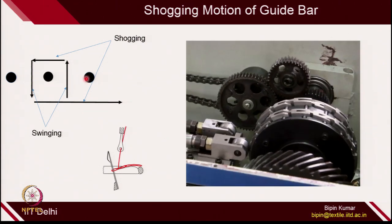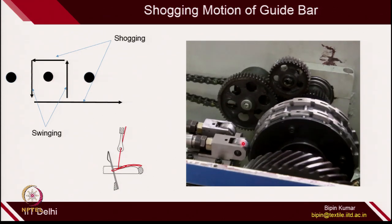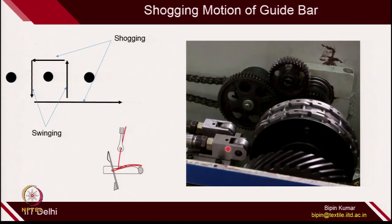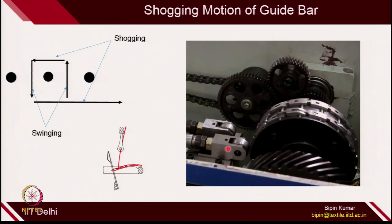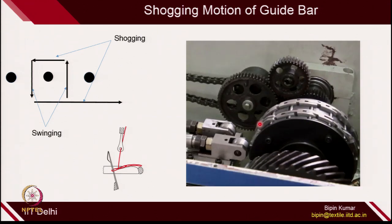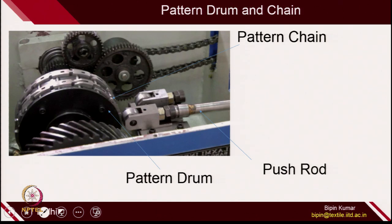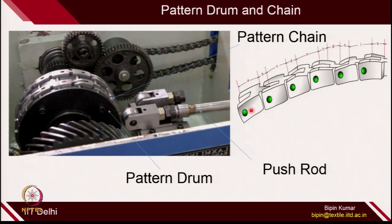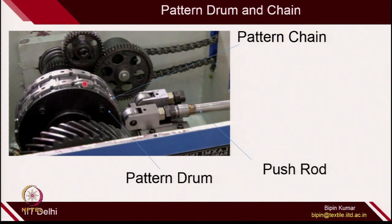The distance of the shift is very small — if the machine is 14 gauge, it means 14 needles per inch, so the distance between 2 needles is 1/14 inch, which varies from 0.5 mm to 2 mm depending on the machine arrangement. Because of this shift, the guide bar moves from one needle position to the other needle position. For a 1×1 tricot, if the distance between 2 needles is 1 mm, this push rod shifts the whole guide 1 mm right or left.